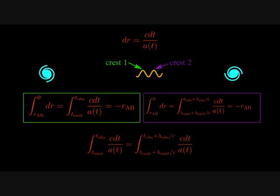The negative sign comes from the fact that the photon is moving in the negative r direction. Thus, the integral over c dt over a is the same for both crests, and we can set them equal.